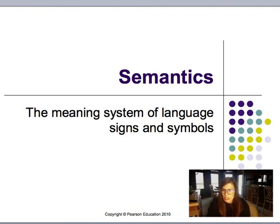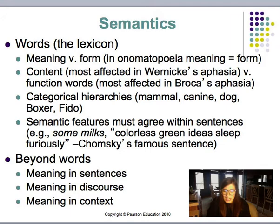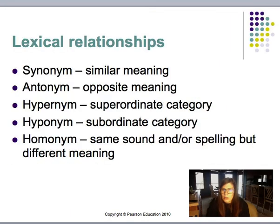Semantics is the meaning system of language signs and symbols. You will need to understand how words and sentences refer to ideas by symbolizing things in abstract relationships, to be prepared to work with children learning to use linguistic symbols to communicate complex meanings. For semantics, we look at words — meaning versus form, content, categorizing — and semantic features must agree within sentences. Beyond words, we have meanings in sentences, discourse, and context. Lexical relationships include the synonym, antonym, hypernym, hyponym, and homonym.